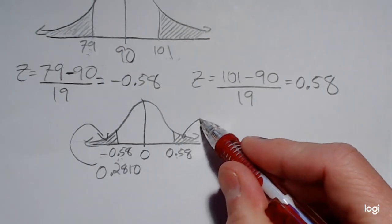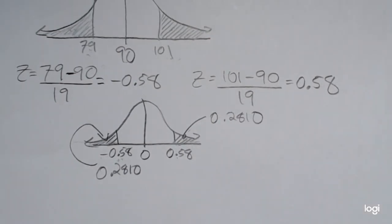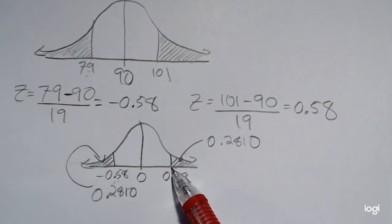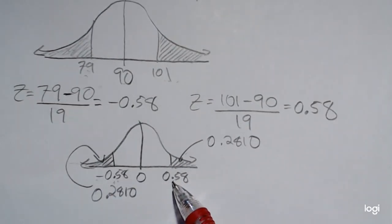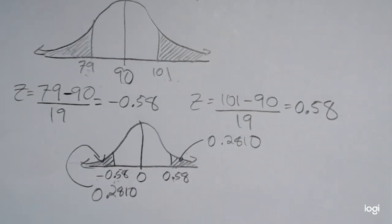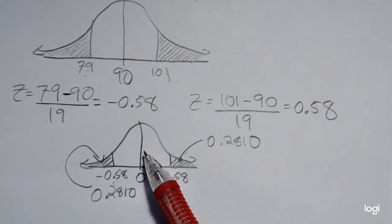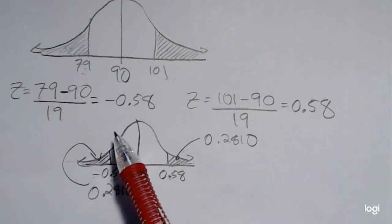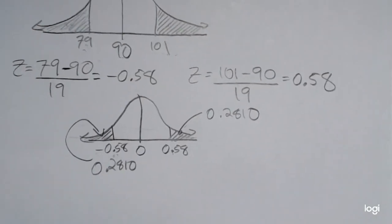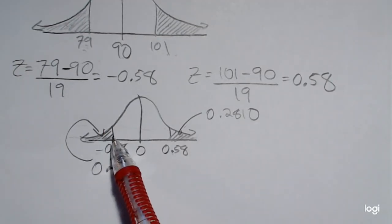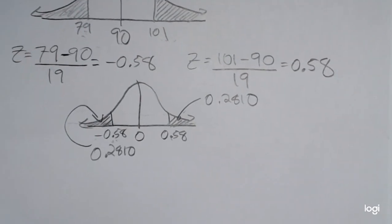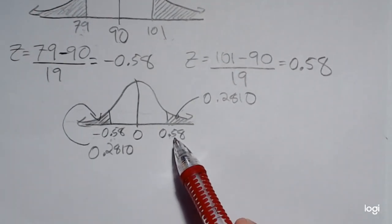By symmetry, this upper tail is also going to be 0.2810. So all I have to do is add those areas together or double one of them. Similarly, I could have found this upper tail first by going to positive 0.58 on the standard normal table and then subtracting from 1 to get this upper tail, because the table will only give the area from left to right. If I wanted to find this upper tail area first, I'd have to remember to subtract this larger piece from 1. That's why I chose this left tail first — I can get it directly without using the complementary area.